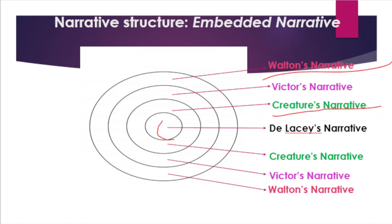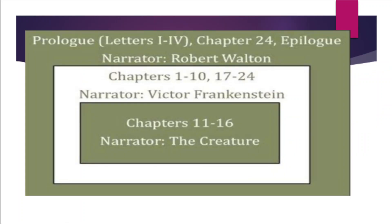Moreover, within this story lies the story about the De Lacey family, the family whom the creature observed for a long time. He narrates the tale of the De Lacey family to Victor, who in turn relates it to Walton. The narrative then returns to Victor until the final chapter, when Walton again takes control of the narration and we return to the frame narrative for the conclusion of the story. So each of the stories is framed by another one.